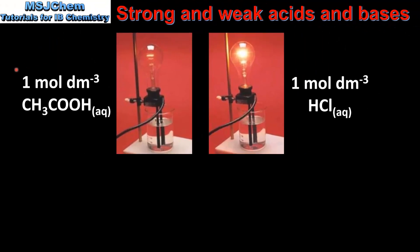Starting with electrical conductivity: on the left we have a 1 mol per decimetre cubed solution of a weak acid, which is ethanoic acid. On the right we have a 1 mol per decimetre cubed solution of a strong acid, which is hydrochloric acid. If we look at the brightness of the bulbs, we can see that the bulb on the right is brighter than the bulb on the left.